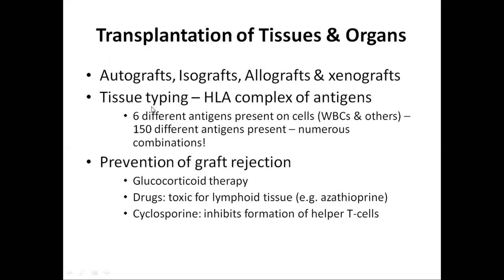HLA antigens are of three classes: Class 1 is present on the surface of all cells of the body; HLA Class 2 is present on the surface of lymphocytes and is linked with immunity; HLA Class 3 is concerned with the formation and activation of the complement system, also linked with immunity. To prevent graft rejection, glucocorticoid therapy is given to suppress the lymphocytes responsible for rejection. Drugs such as azathioprine are toxic to lymphoid tissue, and cyclosporine blocks the activity of T-cells and helper T-cells.